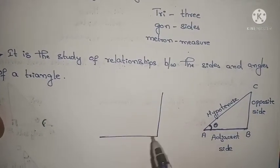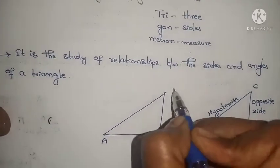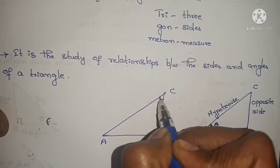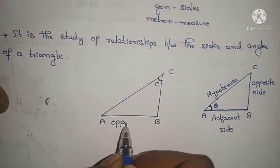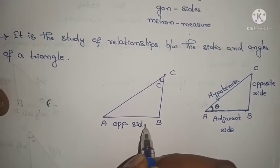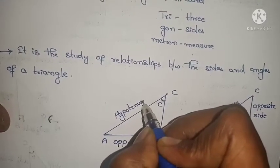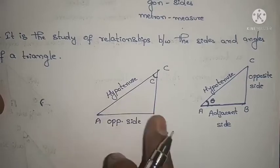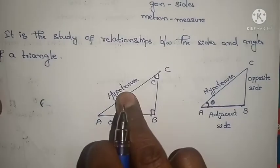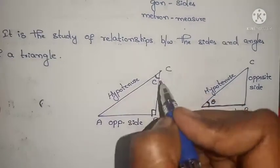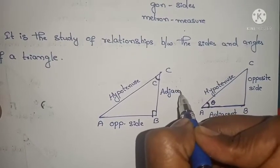Let us consider one more right angled triangle. If I consider a right angled triangle ABC and this is the angle C, then for this angle, this becomes the opposite side. The longest side is the same — it is the hypotenuse. Hypotenuse will always be opposite to the right angle. If this is the right angle, then opposite to it is the hypotenuse.